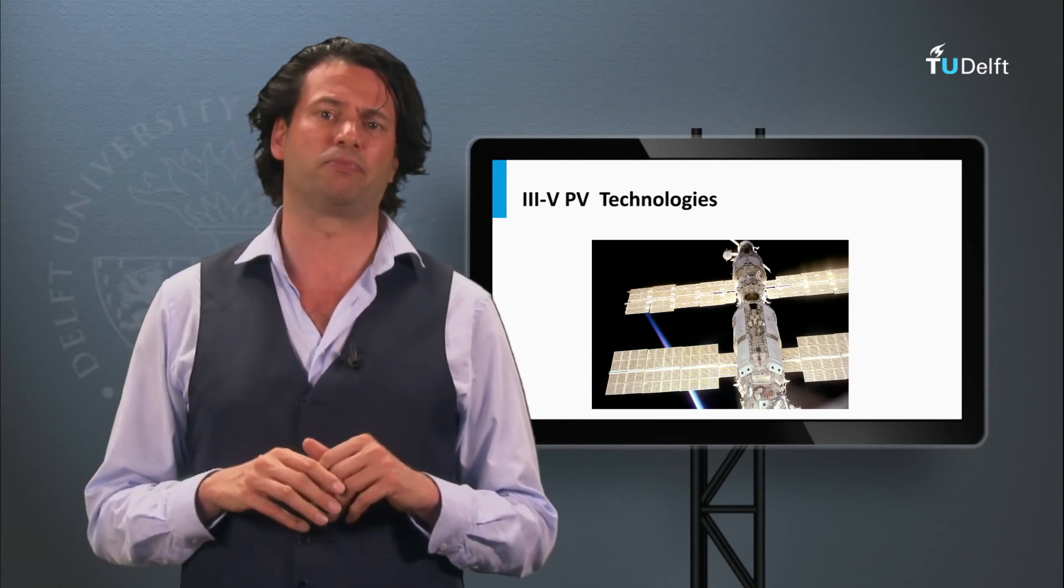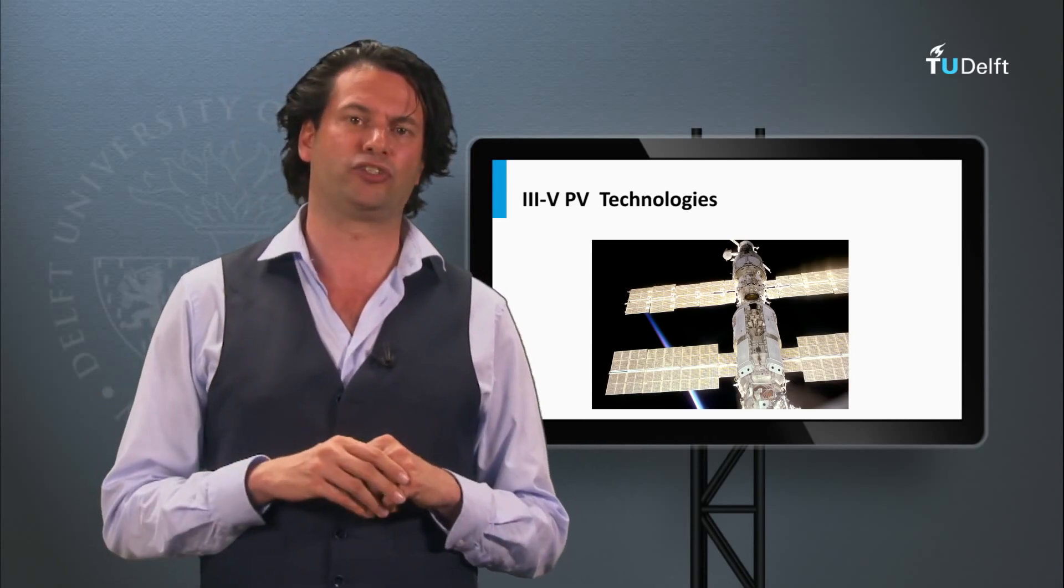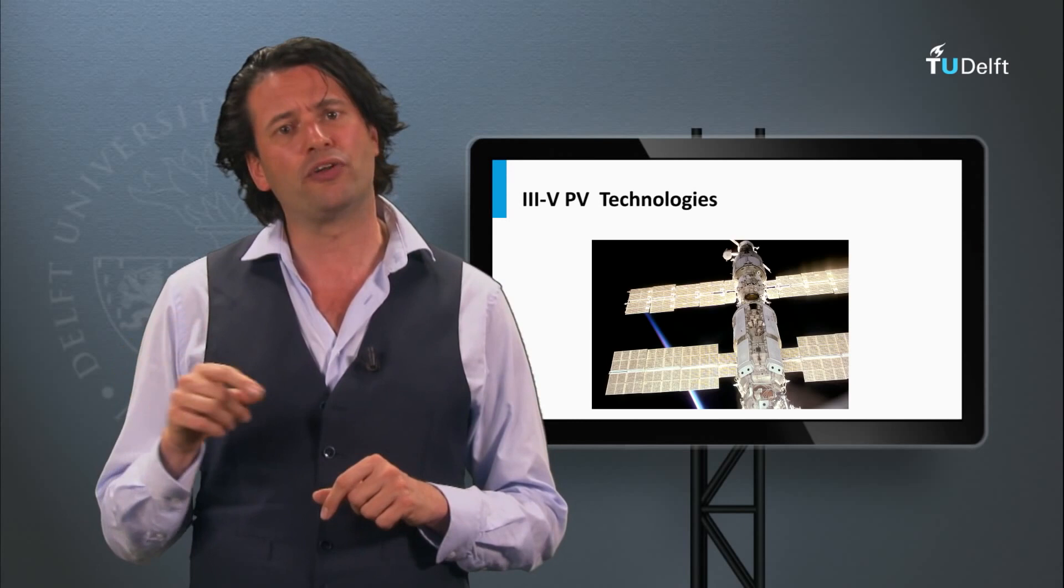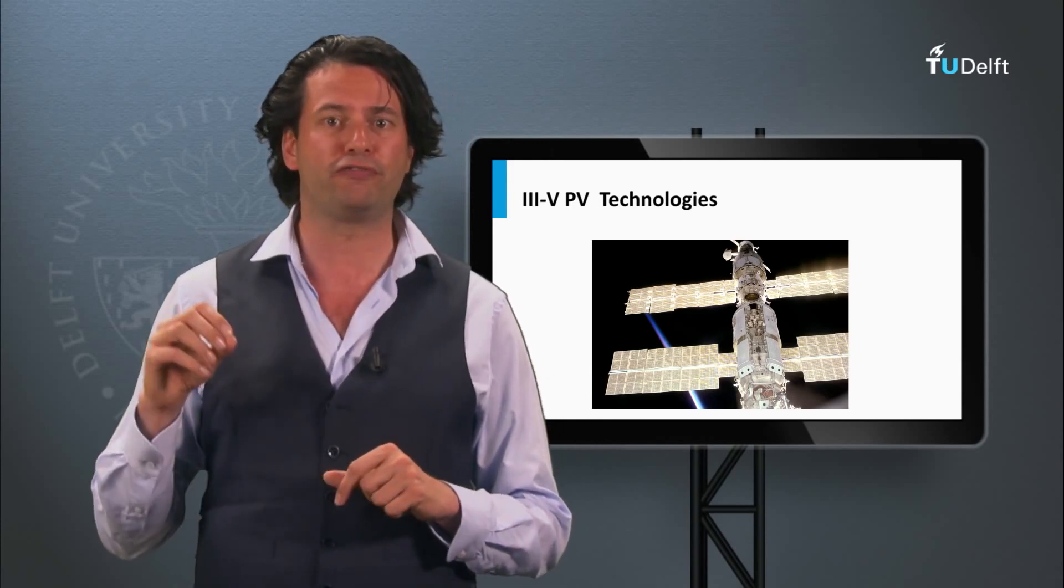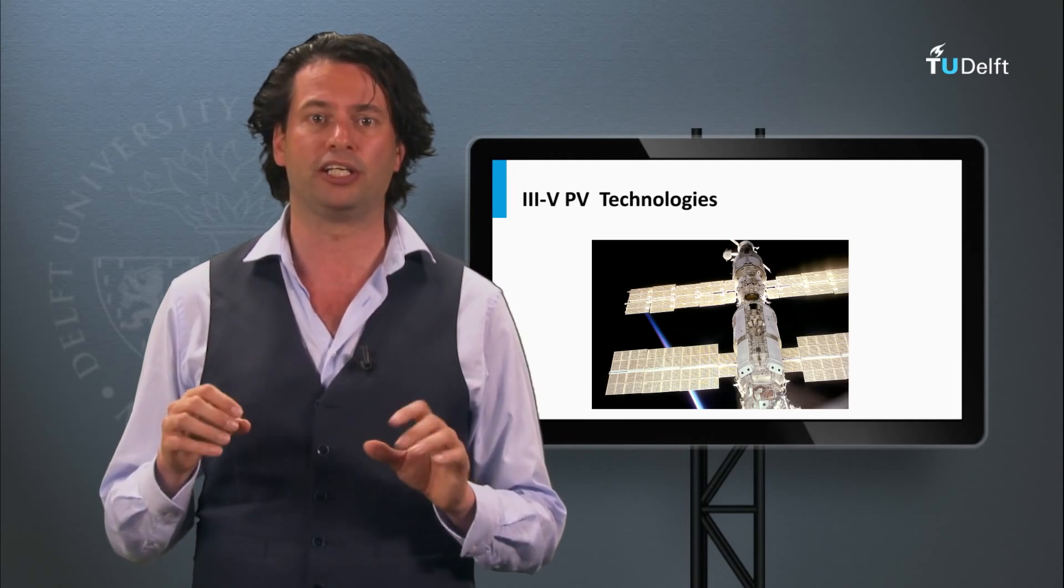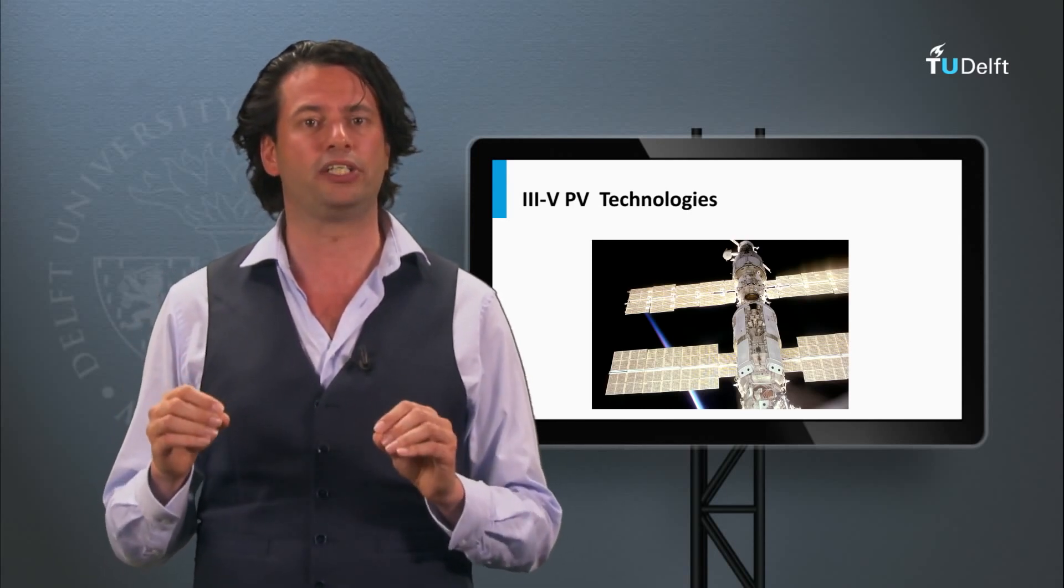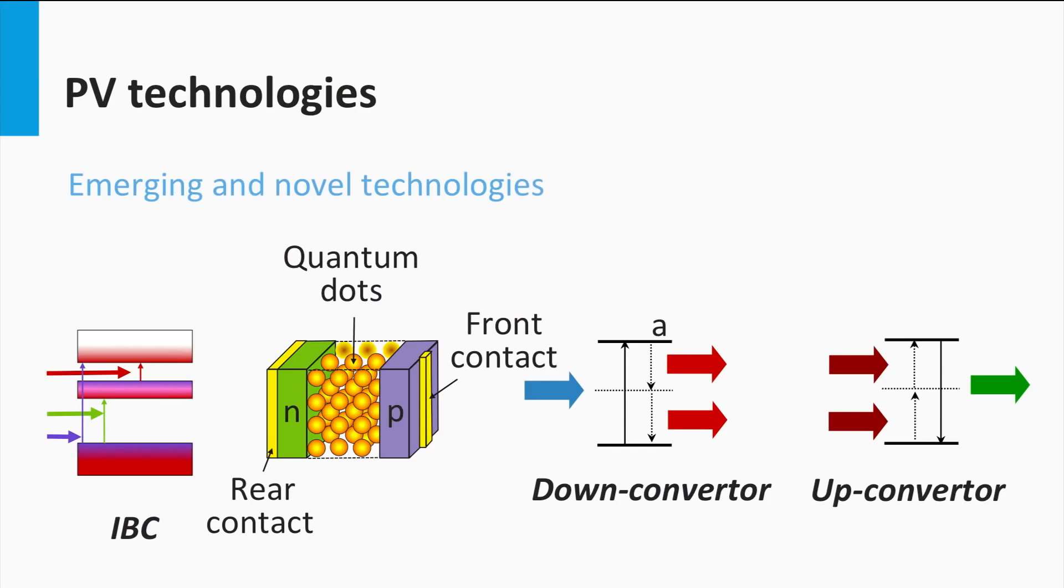The final PV technology we will discuss is based on 3-5 semiconductor materials, such as gallium-arsenide. 3-5 materials are being used in multi-junction devices, often processed on germanium wafers as substrate. The multi-junction based on 3-5 semiconductors are the most efficient solar cells today. The record conversion efficiency of 44% was obtained with a metamorphic triple junction in 2012. The 3-5 semiconductor solar cells are being used in concentrator PV technology and in space applications. This technology will be discussed in week 5.